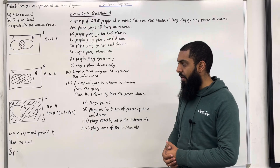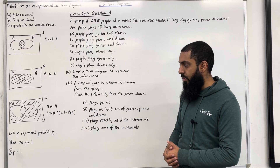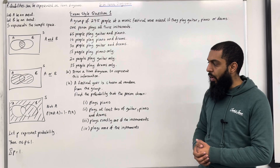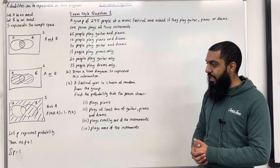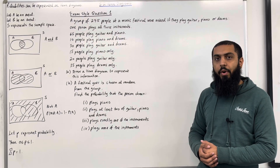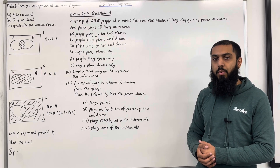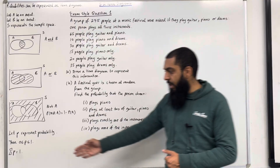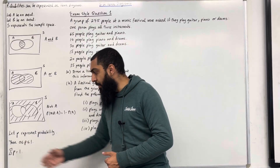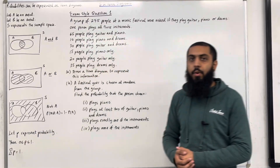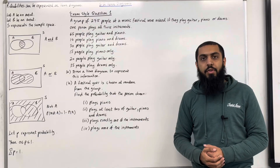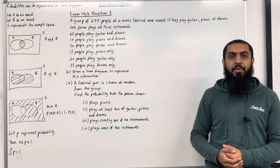That is a very important result. Let P represent probability. We know that P is greater than or equal to 0 but less than or equal to 1. The total of the probabilities is equal to 1. These are the key facts of 5.2 Venn Diagrams.